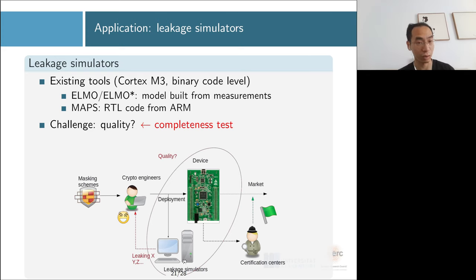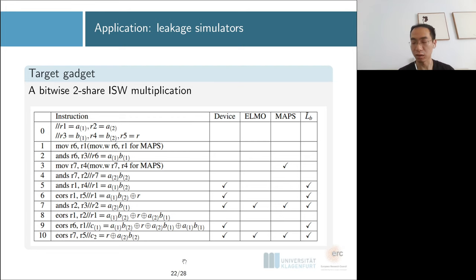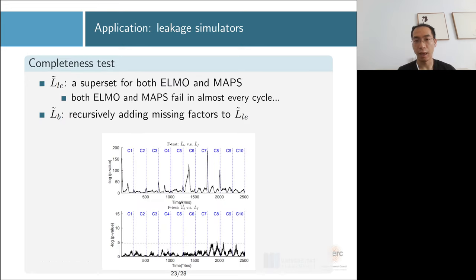ELMO family is built from profiling models from real measurements, and MAPS is built from the Cortex-M3 RTL code. The gadget we're going to test is this very simple bitwise ISW multiplication code with only about 10 instructions. The model we will use is a linear extended model, which is a bit more powerful than both the ELMO model and MAPS model. But if we verify it with the completeness test, we find it almost fails in every single cycle, meaning you are missing some leakage.